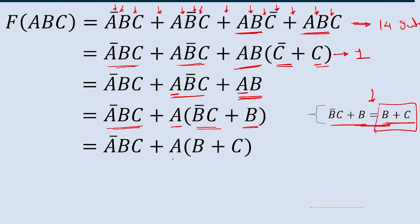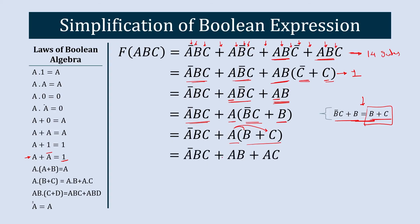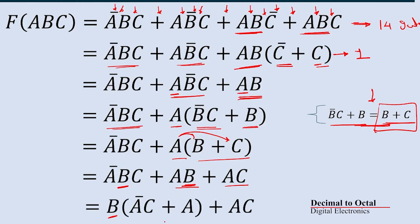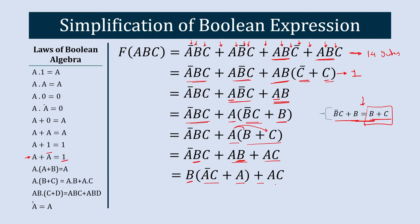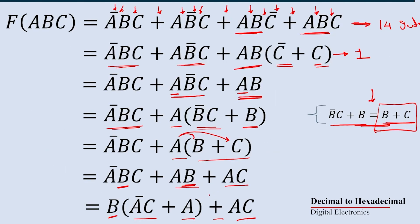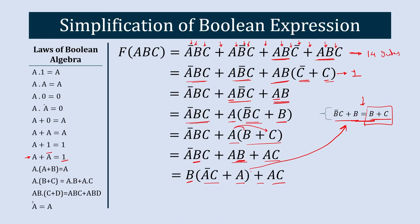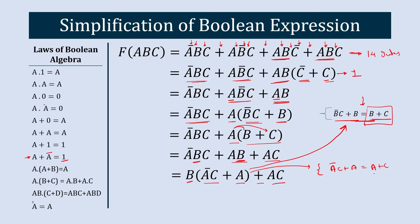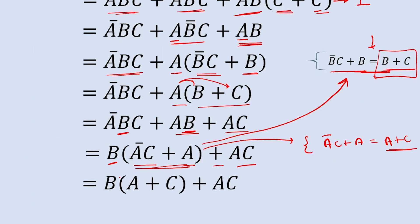So we can write: ĀBC + A · (B + C). Multiplying A through gives: ĀBC + AB + AC. Now in the first and second terms, B is common. Factoring out B gives: B · (ĀC + A) + AC. The expression ĀC + A is similar to a known identity: ĀC + A = A + C. So we replace ĀC + A with A + C.